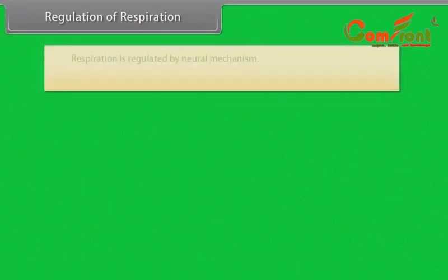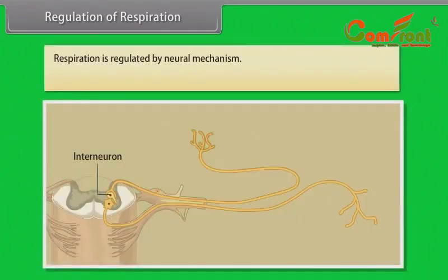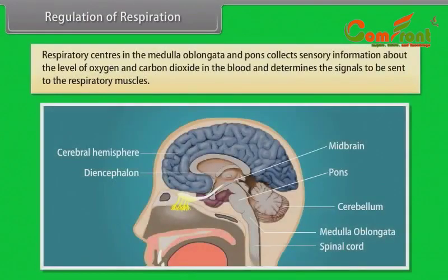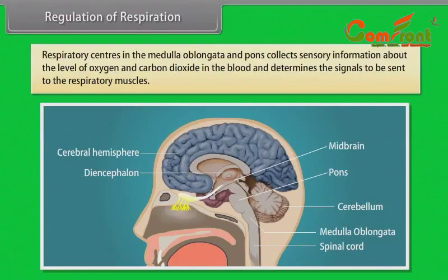Regulation of respiration: Respiration is regulated by a neural mechanism. This involves respiratory centers, afferent and efferent nerves. Respiratory centers in the medulla oblongata and pons collect sensory information about the levels of oxygen and carbon dioxide in the blood, and determine the signals to be sent to the respiratory muscles.